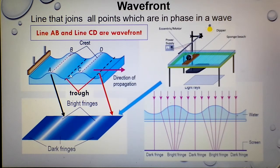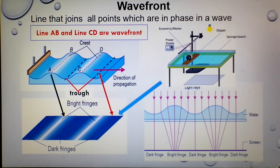Similarly, if you join C and D, which are also in-phase, that line is also called the wave front for the crest.